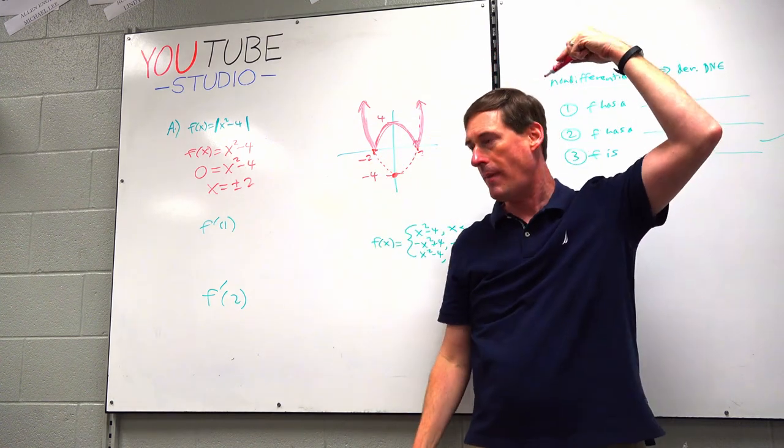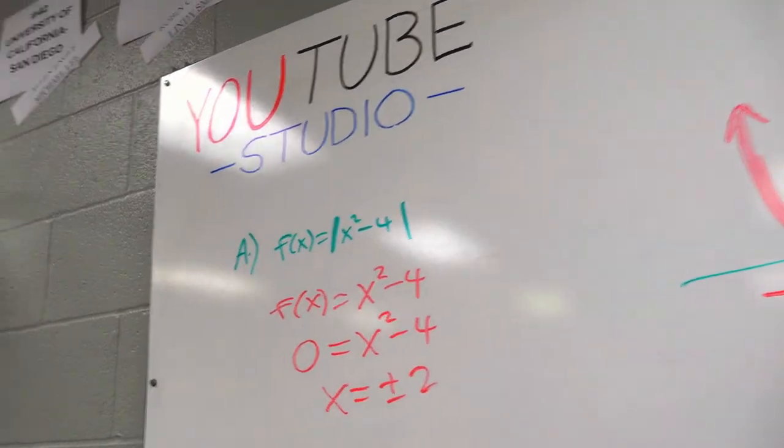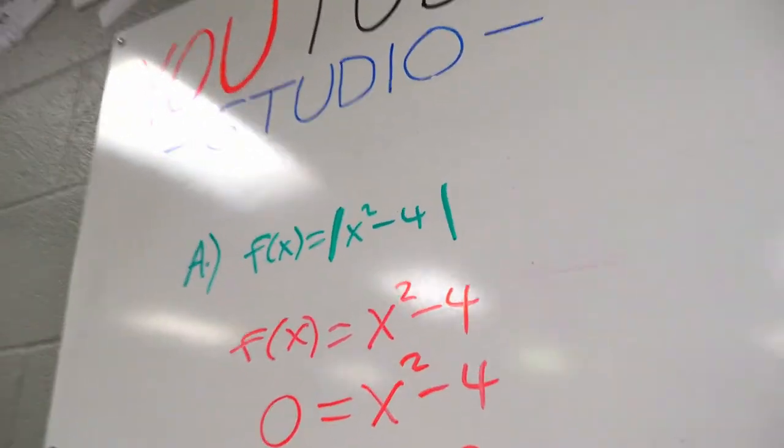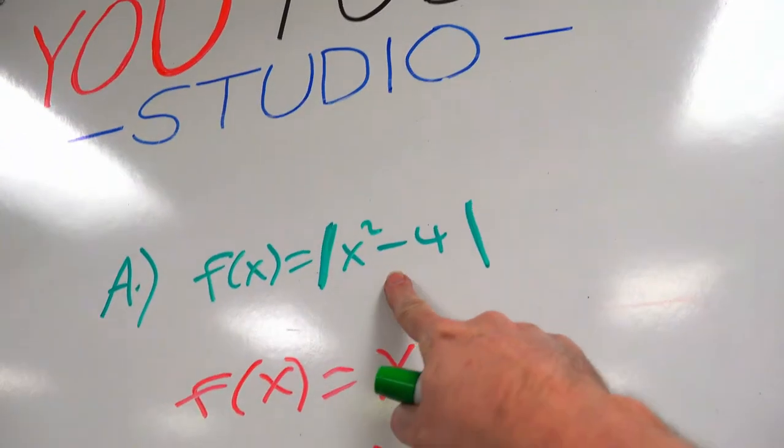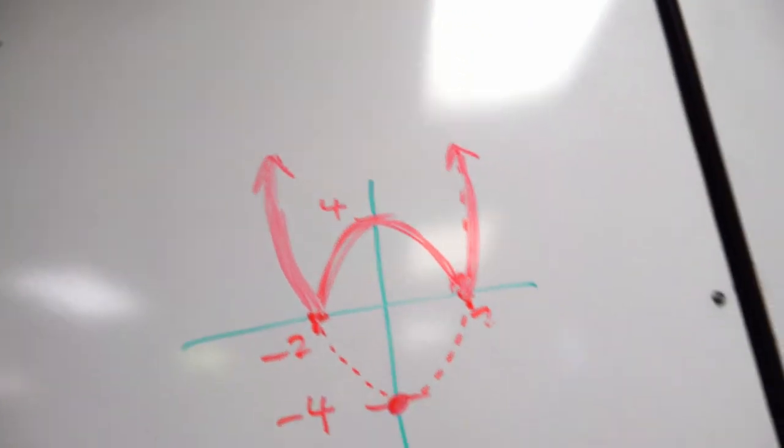Anything that's negative becomes positive, and anything that was already positive stays positive. That's what absolute value does. If you hide that little dashed part, the actual graph of the absolute value of X squared minus 4 is kind of like a bull with some horns. In note 6-3, we graphed something exactly like this before.